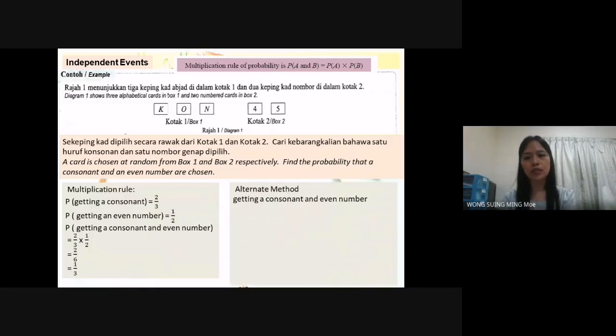We have alternate method getting a consonant and even number. The number we can list out is K4 and M4. Number of sample space for independent events is 3 times 2. Because box 1, we have 3. Box 2, we have 2. Number of sample space equal to 6. Probability getting a consonant and even number is 2 over 6 equal to 1 over 3.